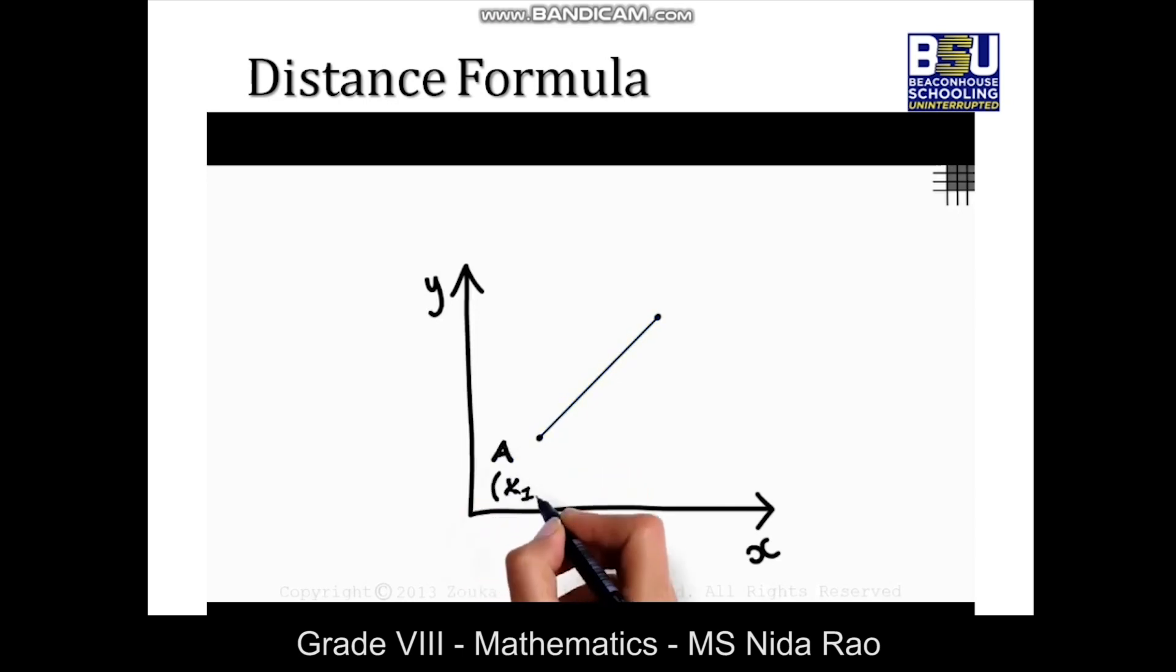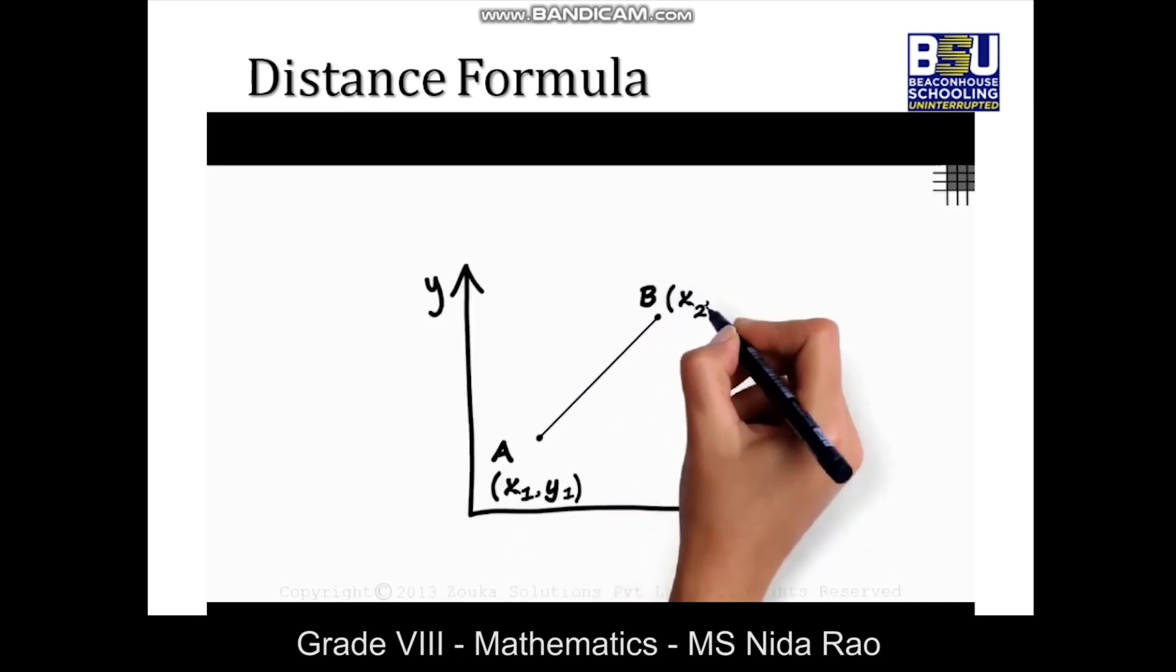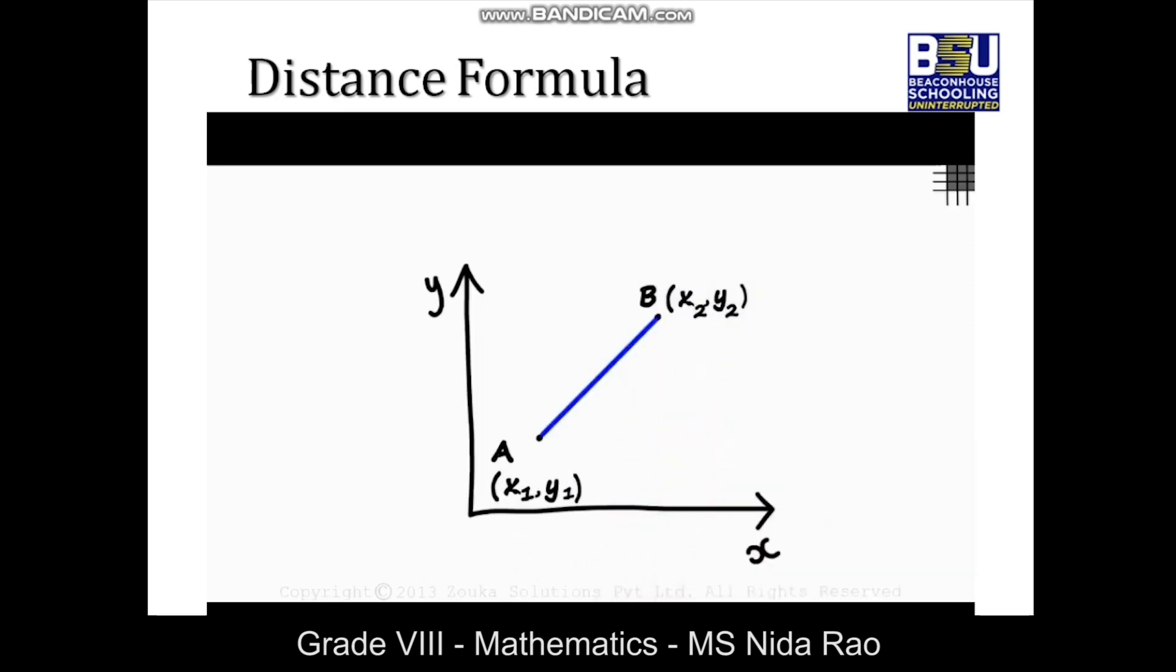Let one of the endpoints be A(x₁, y₁) and B(x₂, y₂). To get the length of AB we need to form a triangle in which AB is the hypotenuse. So we drop a perpendicular to the x-axis and then draw another perpendicular to BC. So the coordinates of point D would be (x₂, y₁).